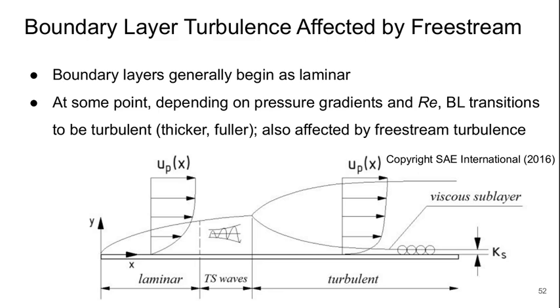The boundary layer turbulence is affected by the turbulence in the free stream. Boundary layers generally begin as laminar. And at some point, depending on the pressure gradient and the Reynolds number, the boundary layer will transition to be turbulent where it's thicker and more full. In other words, by fuller we mean that the velocity is higher up until closer to the wall. And when and how this happens is affected strongly by the level of free stream turbulence.